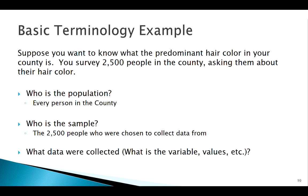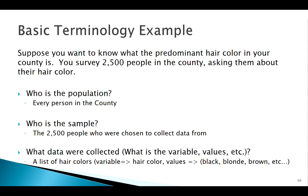What was our data collected? What's our variable, our values, and all that? Well, our variable here — the characteristic of these individuals that we're interested in — is hair color. Potential values would be things like black, brown, blonde, and so on. We would just have a list of a bunch of those words. This is just a quick simple example, but we want to make sure we're familiar with all of this terminology.